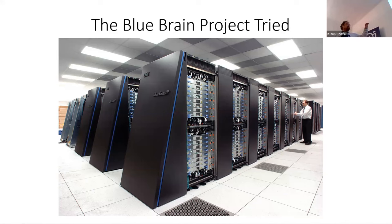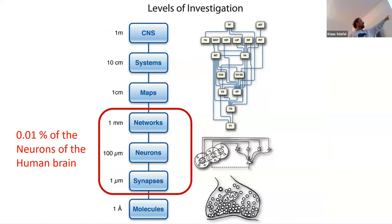Now, so they had a massive supercomputer, and they simulated this, right? So they simulated about 10 million neurons, and each neuron was represented in great detail. So they went from, essentially, the networks level to the neuron and the synapse.